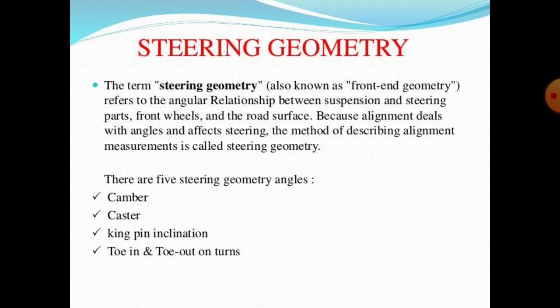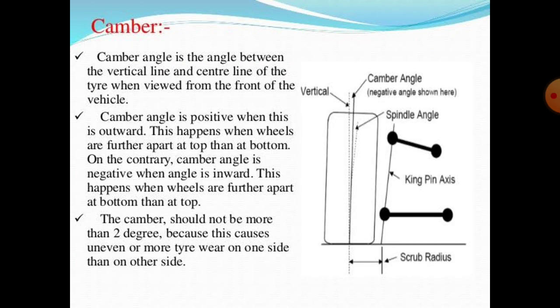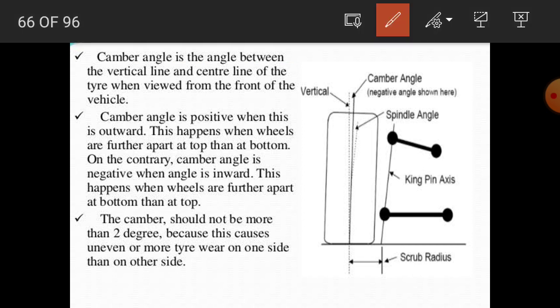First is the camber angle. Camber angle is the angle made between the vertical line and the center line of the tire when viewed from the front of the vehicle. We have to see this in the diagram. That angle is known as the camber angle.